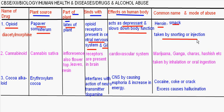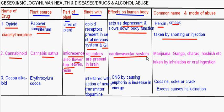Next is cannabinoids, obtained from Cannabis sativa. The parts of the plant from which it is obtained are the inflorescence, flower tops, leaves, and resin. Receptors are mainly present in the brain, and it affects the cardiovascular system. Common names include marijuana, ganja, churras, and hashish. Mode of abuse is inhalation or oral ingestion, where oral ingestion is basically taken as capsules.